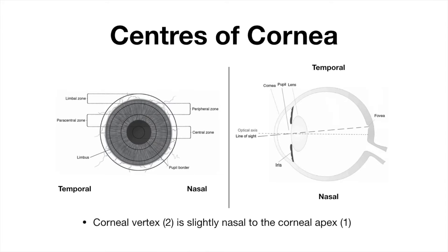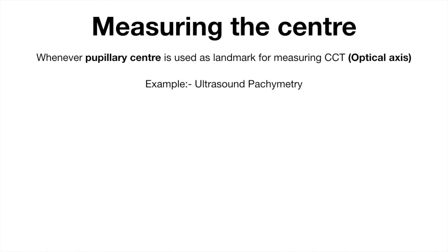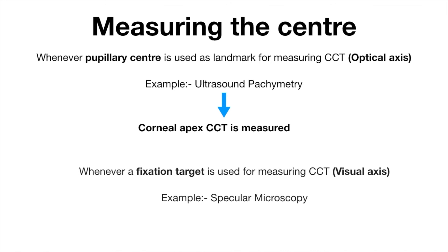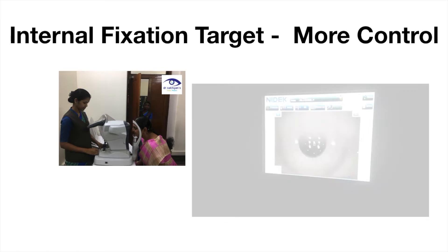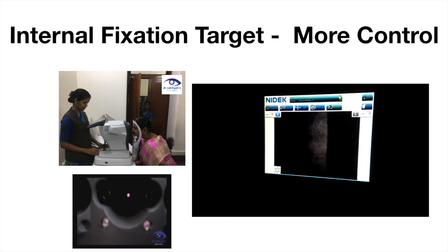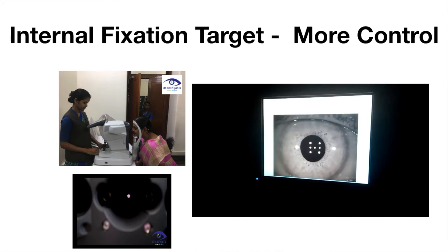The vertex is slightly nasal to the apex. When the optical axis is used as a landmark, CCT apex is measured. When a fixation target is used, the visual axis is focused and CCT vertex is measured.